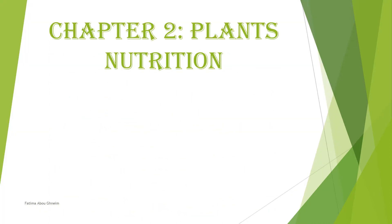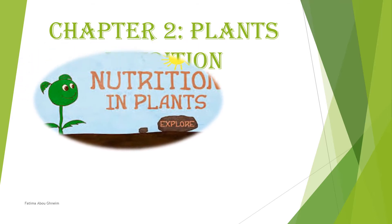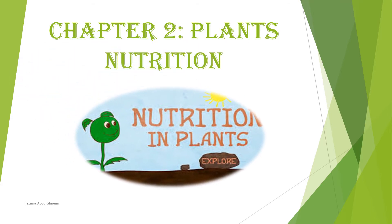Hello grade 7. Today we're going to start with chapter 2, which is called Plants Nutrition. We all know that plants are living things which grow and they produce. Whether these plants are chlorophyllic or not, they need nutrition. But what are their nutritive needs and how do they obtain these needs from their surroundings? What process carries out the production of organic matter and where?